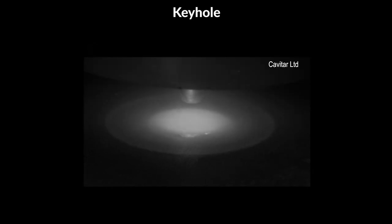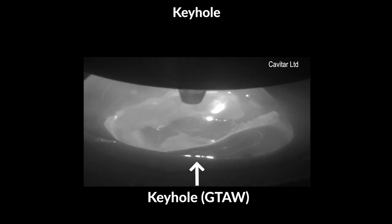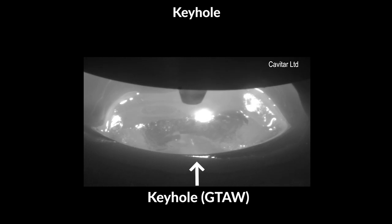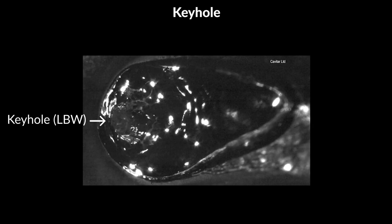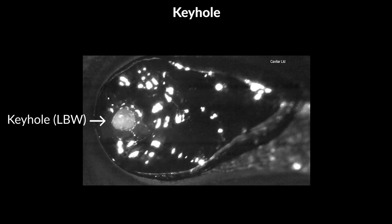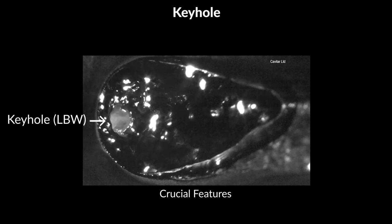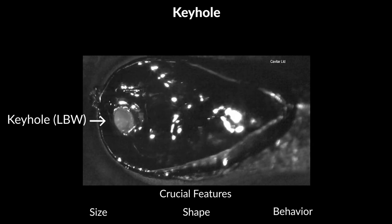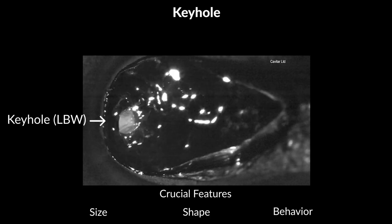7. Keyhole. A keyhole forms in the middle of the meltpool as the arc heats up the material and parts of it vaporize. Keyholes are especially important in LBW, where the laser beam vaporizes the weld material efficiently, forming a keyhole via which the energy transmits to the surrounding areas. Crucial features of the keyhole include its size, shape, and behavior, all of which affect the quality of the weld. The keyhole is closely related to the meltpool.